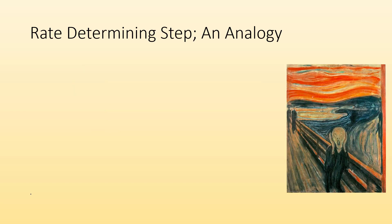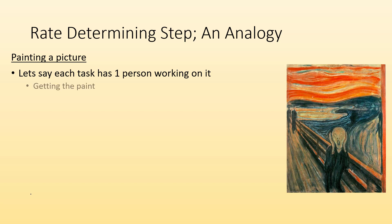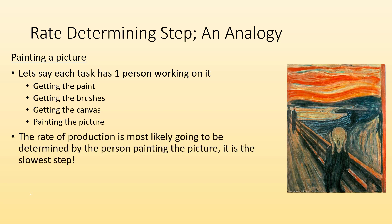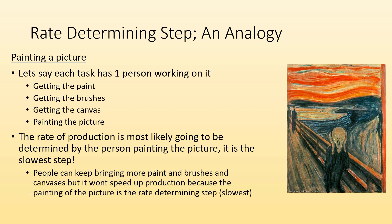So let's talk about rate determining steps, and I'll start with an analogy. Let's say you and a team were tasked with painting a picture, where each task has one person working on it. One person's getting the paint, another person's getting the brushes, another person's getting all the canvases, and another person is painting the picture. Well, the rate of production is most likely going to be determined by the person painting the picture — it's probably the slowest step. So it doesn't matter if people keep bringing more paint and more brushes and more canvases; it's not going to speed up production because painting the picture is the rate determining step. It's the slowest one — it can't go any faster than that one step.